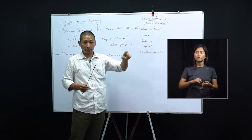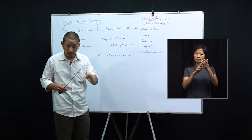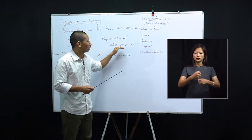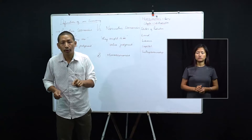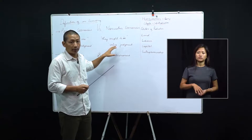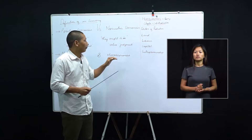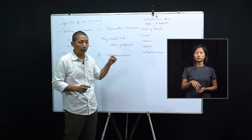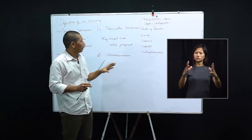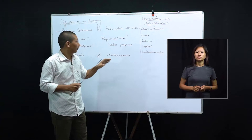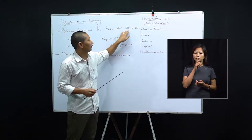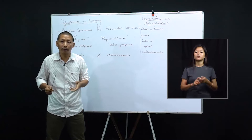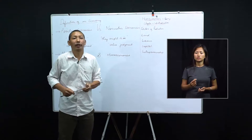Normative economics analyzes the economic behavior as they ought to be, and at the same time makes value judgment about whether the situation is good or bad. There is also another economist by the name Marshall — when you go to higher classes, Marshall will give you trouble because he has given so many theories. Marshall advocated that economics is purely a normative science, whereas Professor Robbins says economics is positive science — it all depends on how you support your statement.